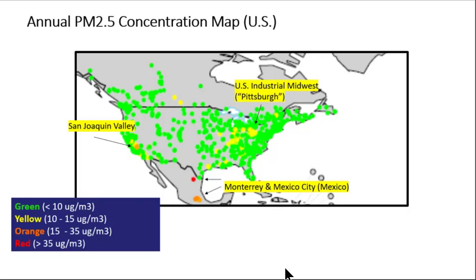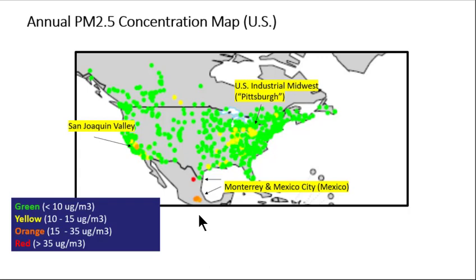A map of current measurements of annual averaged PM2.5 concentrations across the U.S. is shown on this slide. The symbols are colored according to concentration ranges, as shown on the legend. Much of the country has maintained PM2.5 concentrations less than 10 micrograms per meter cubed, complying with annual standards of 12 micrograms per meter cubed. Areas of higher PM2.5 are indicated on the plot, for example in the California Central Valley and also areas of the industrial Midwest, where sulfate PM2.5 is common. We will discuss this in more detail in later slides. Notice also the higher values in Mexican cities, where emission controls are less stringent. Mexico City in particular has very poor air quality due to its size and unfavorable setting surrounded by mountains.